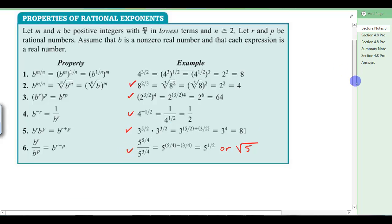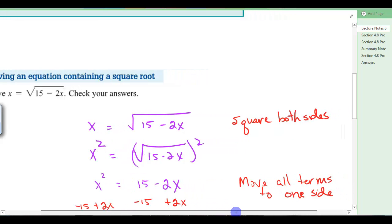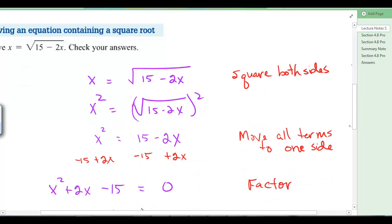Let's look at an example here about solving an equation containing a square root. So this is your initial equation. x equals the square root of 15 minus 2x. When you have a square root, you want to square both sides to get rid of that radical. So that's what I showed you here. We're going to square both sides. On the left, we end up with x squared. And on the right, when you square a radical, it goes away. So I've got 15 minus 2x.